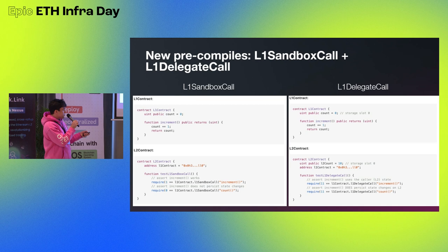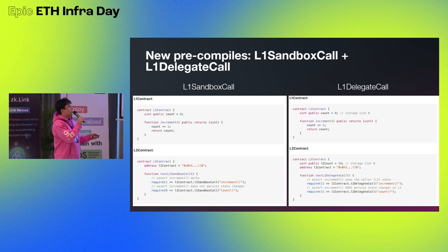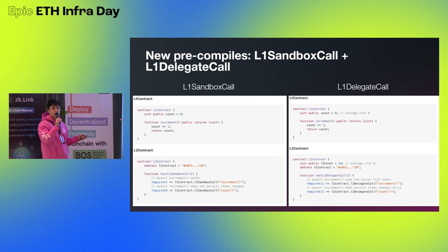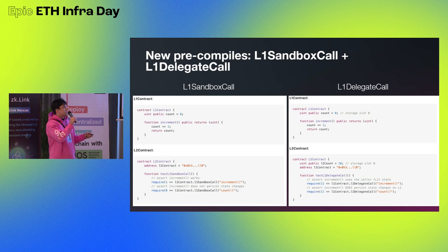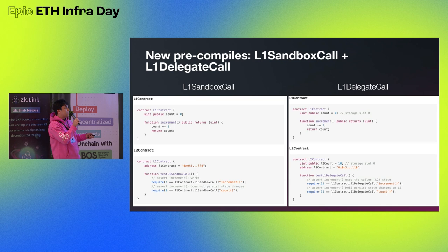The second precompile is L1 Delegate Call. We have the same counter contract on L1, but this time we use delegate call. Delegate call means you simulate the call inside your L1 node except you use the storage of the calling contract. In this L2 contract, at storage slot 0 we have the variable L2 count set to 10. It reads the increment function from the L1 contract but uses the L2's storage — so it increments to 11. The state changes are persisted at the end of the precompile.